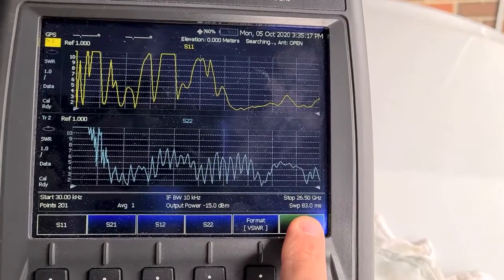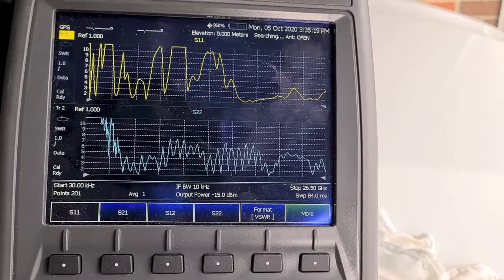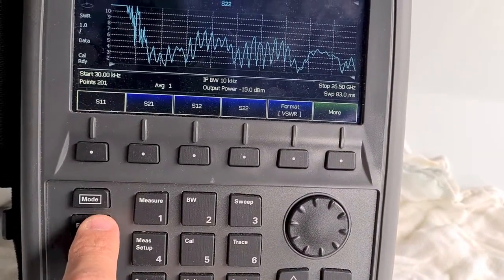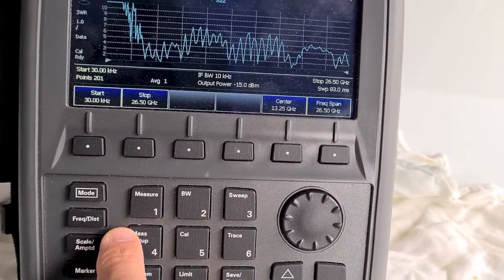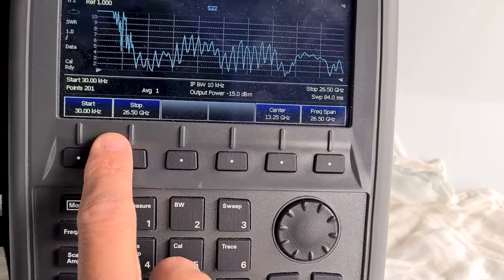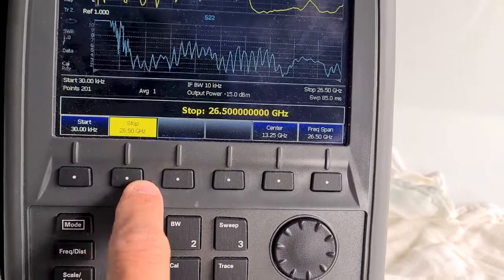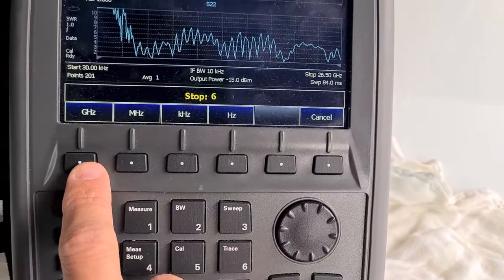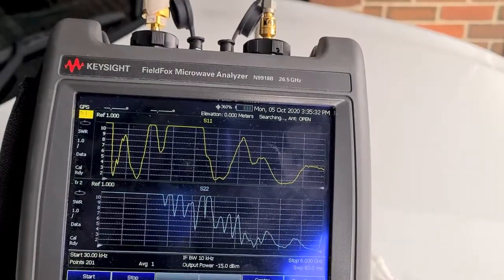And again, this is a 26.5 gig box. Let's lower down the frequency just for the sake of trying, up to 6 gig. Start 30k, stop 6 gig. There we go.